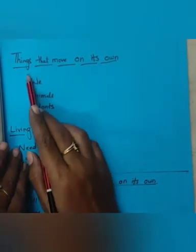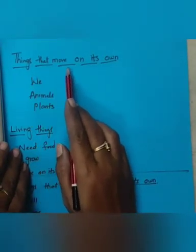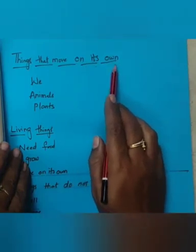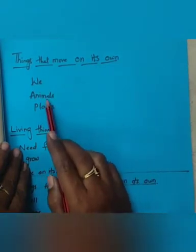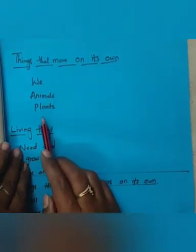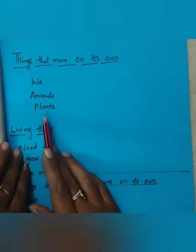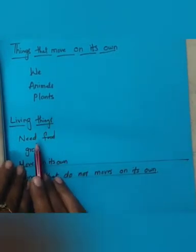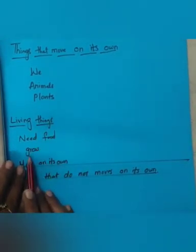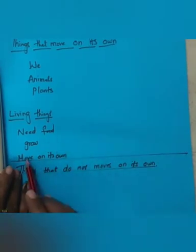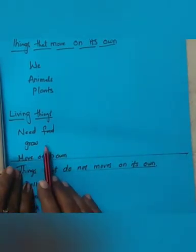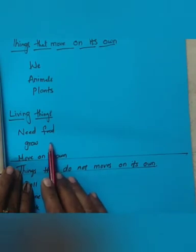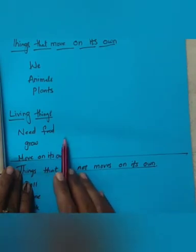Children, things that move on their own: we, animals and plants. We are living things. We need food to grow and we move on our own. Yes, we don't need any battery or engine. We can move on our own.